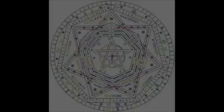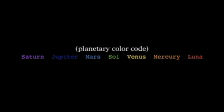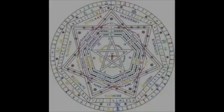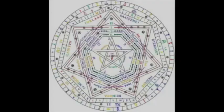Firstly, let us introduce the color coding system that we will use to decipher the Sigillum Dei Aemeth. Here we see that each of the seven planets is assigned one of the seven colors of the spectrum of light divided in a prism.